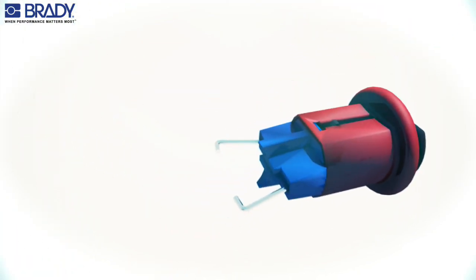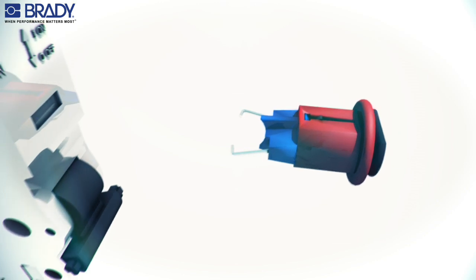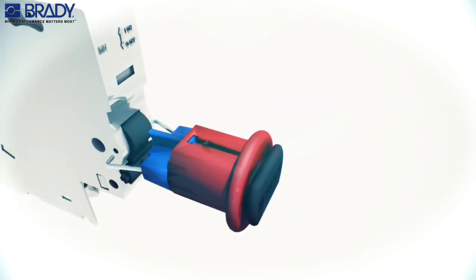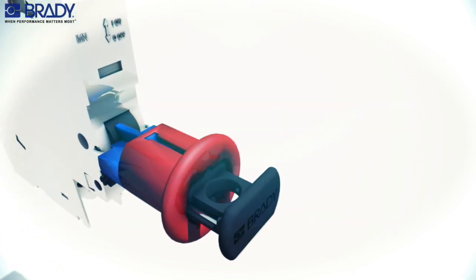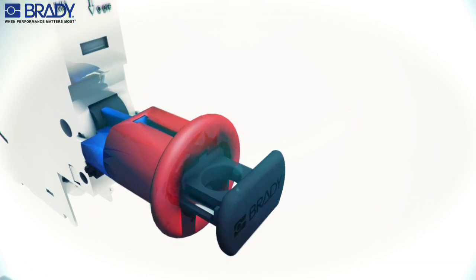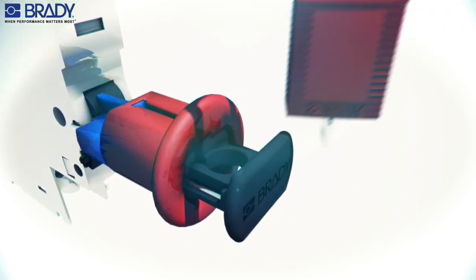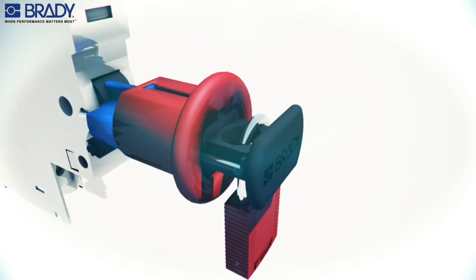Press the lockout device push button to disengage the pins. Position the pins into the small holes of the casing by releasing the push button. Attach a Brady safety padlock through the lockout device hole to complete the lockout.